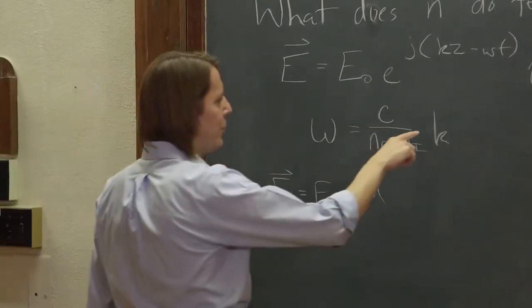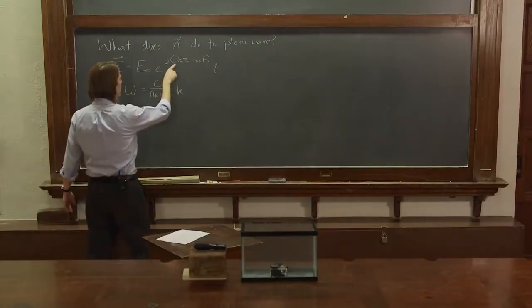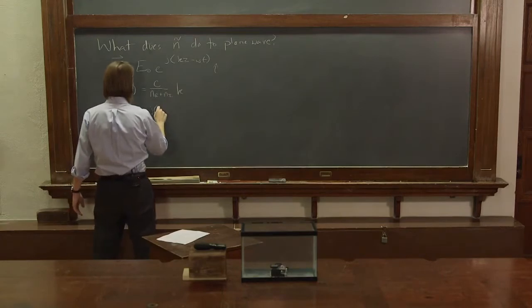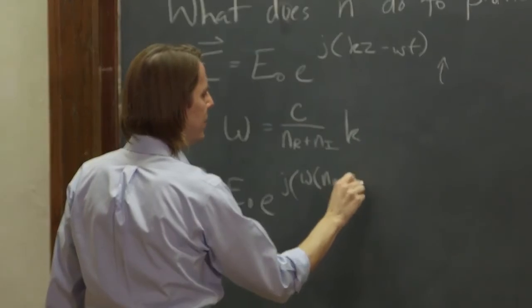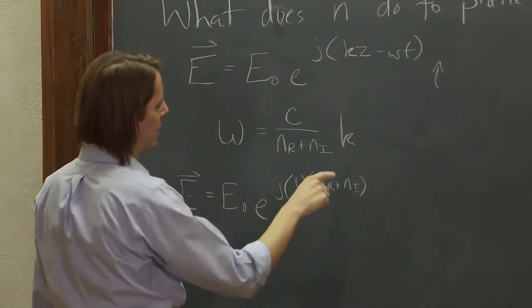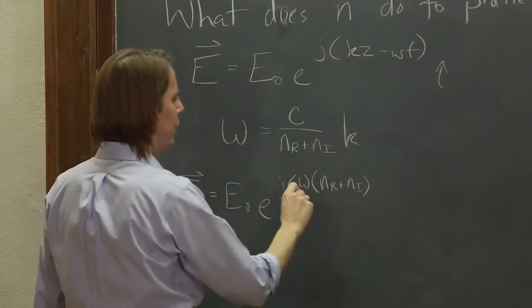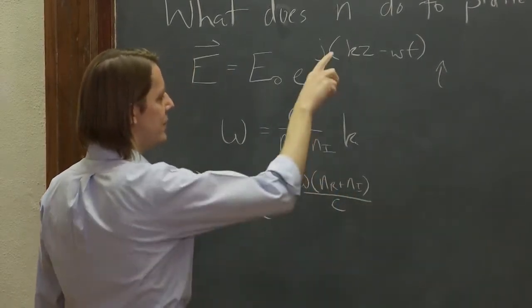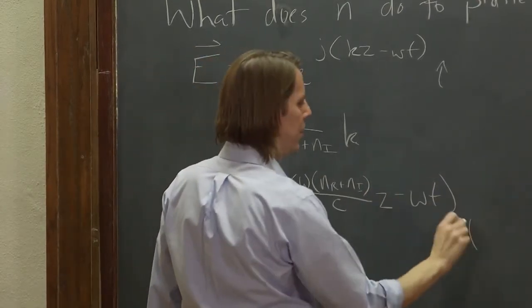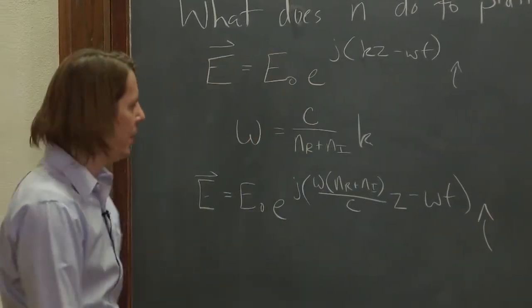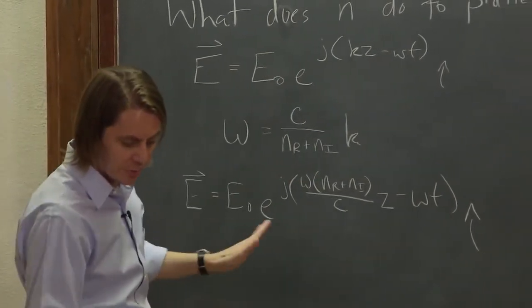So I am going to solve this for k and say k is omega times n real plus n imaginary over c. So that's the k part. And then times z. And then minus omega t. So there you go. We have applied this dispersion relation to this plane wave to see what happens.